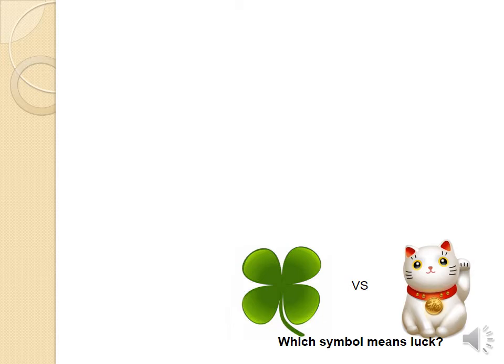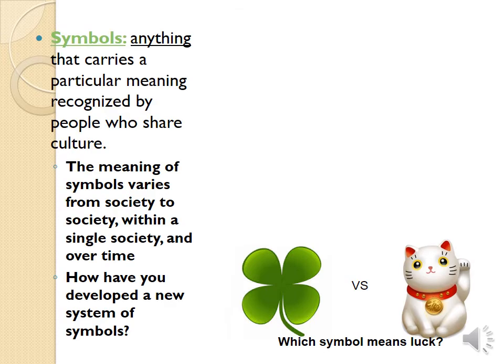Maybe not so much with lucky kitty or lucky cat — this is a Chinese good luck symbol. Symbols are anything that carry a particular meaning recognized by people who share a culture. If you see someone find a four-leaf clover, they'll say it's good luck — like finding a penny or maybe having a rabbit's foot. We don't always know where those symbols come from, but if the culture embraces it and shares the meaning, it becomes part of that culture. The meaning of symbols varies from society to society and can even vary within a single society and over time.